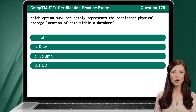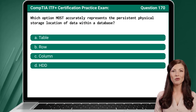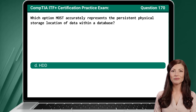Question 170: Which option most accurately represents the persistent physical storage location of data within a database? The answer is D: HDD.